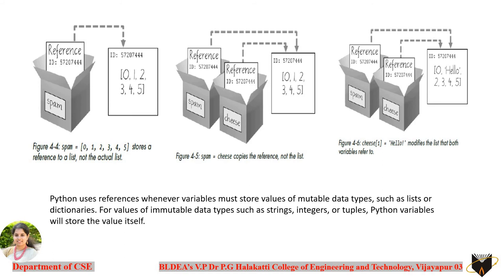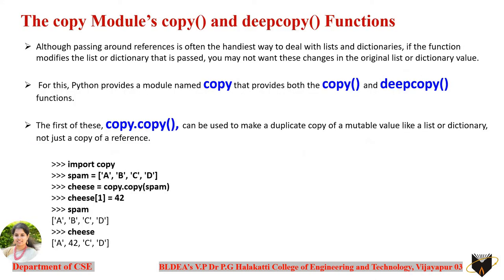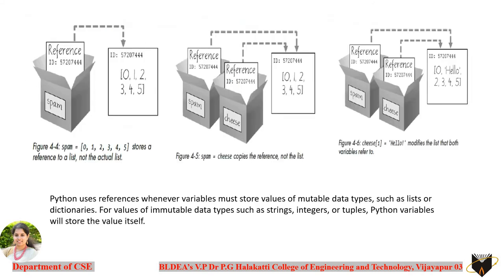You might be asked to explain references, or where reference IDs are used with respect to data types in Python. One expected question is: 'Reference IDs are used only with lists and dictionaries — justify.' To answer this, you need to understand mutable vs immutable data types and explain why references apply to list and dictionary but not strings, integers, or tuples.